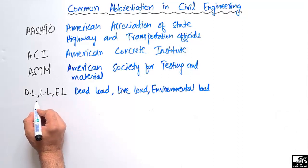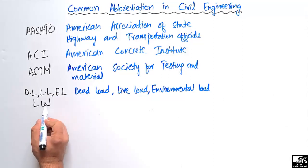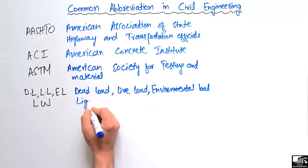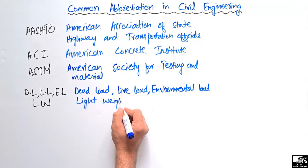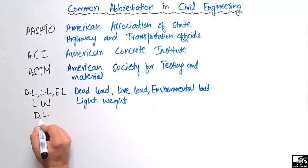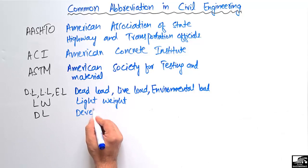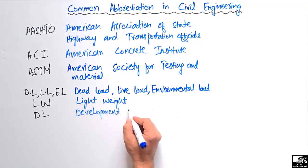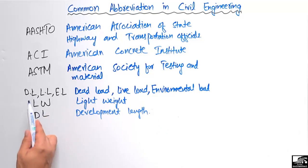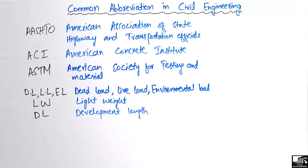The fifth abbreviation is LW. When there is no dot between the two letters, it is different from the load abbreviations. LW represents lightweight. Similarly, dL without a dot represents development length. There is a huge difference between dead load (D.L. with a dot) and development length (dL without a dot), which represents the development length of a steel bar.